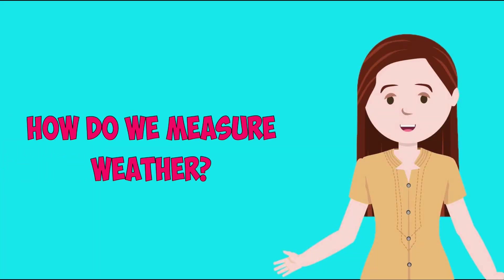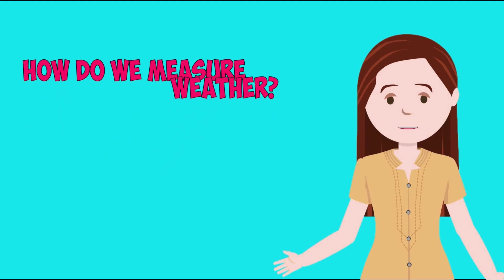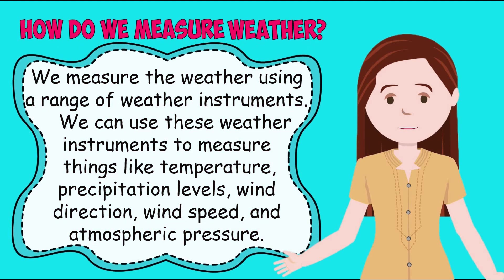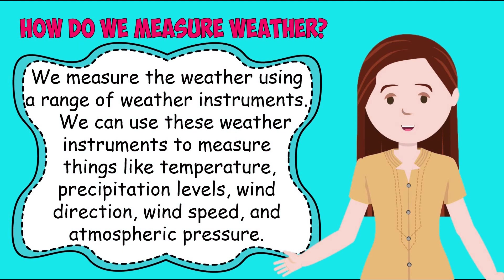How do we measure weather? We measure the weather using a range of weather instruments. We can use these weather instruments to measure things like temperature, precipitation levels, wind direction, wind speed, and atmospheric pressure.